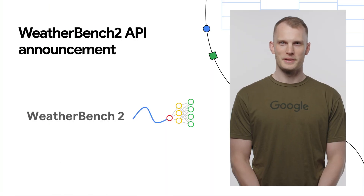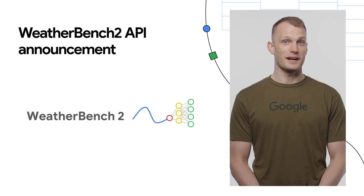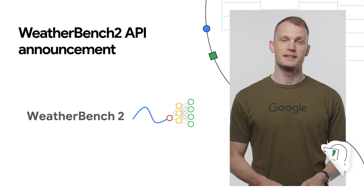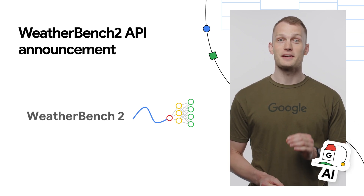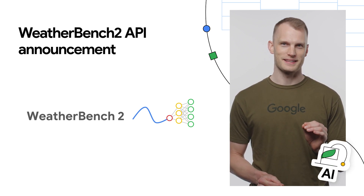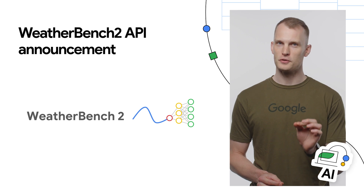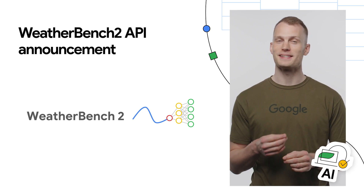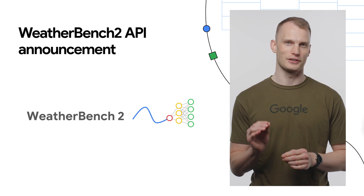The WeatherBench 2 API has been released. It facilitates a revolution in weather forecasting, fueled by advances in machine learning.